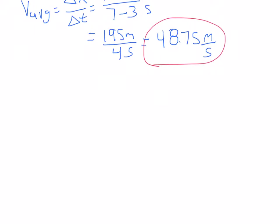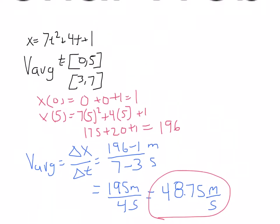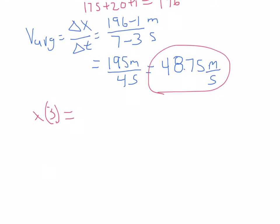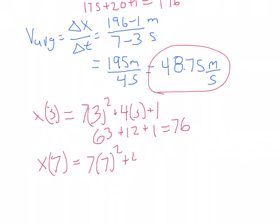Now from 3 to 7, let's see. We want X of 3, and that equals, so your function is 7t squared, 7 times 3 squared plus 4 times 3 plus 1. That gives us 63 plus 12 plus 1, so that equals 76.